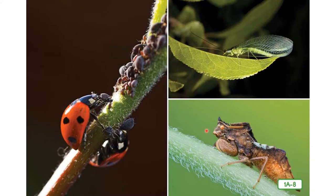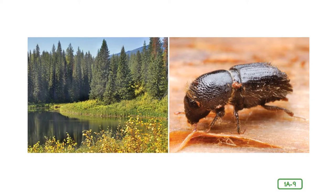From grasslands, let's move to a forest habitat. Both cone-bearing evergreens and deciduous trees live in this forest. Evergreens have green needles all year round and deciduous trees drop their leaves each year. Many trees, like these pine trees, are host to a variety of bark beetles. These tiny insects can kill huge trees. Bark beetles burrow under a tree's bark, creating a series of tunnels in which they lay their eggs.